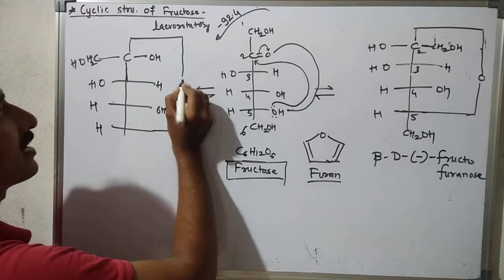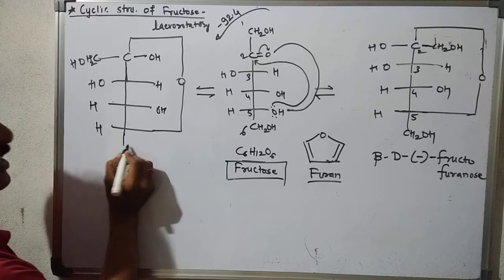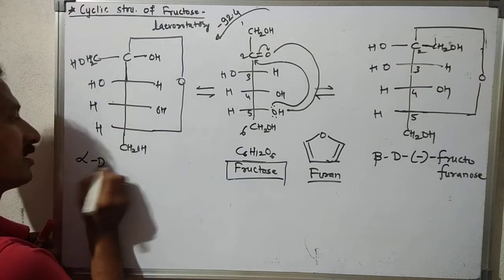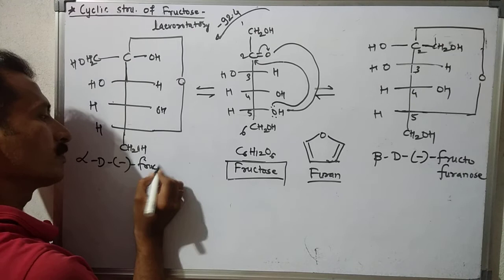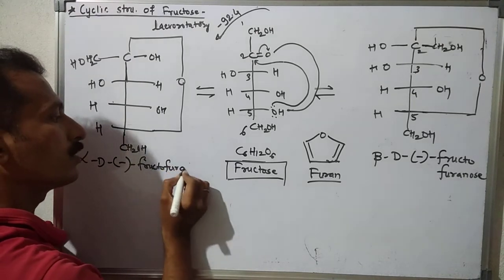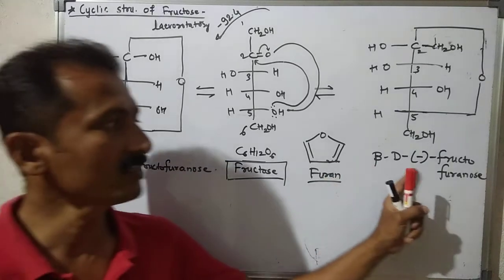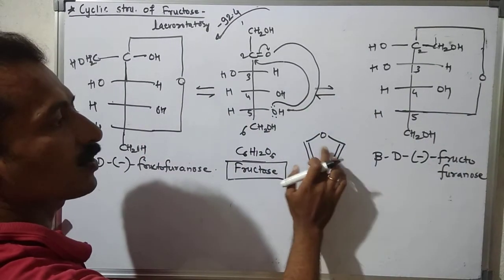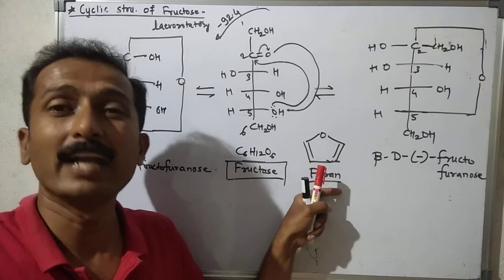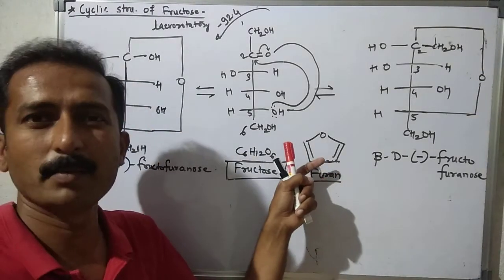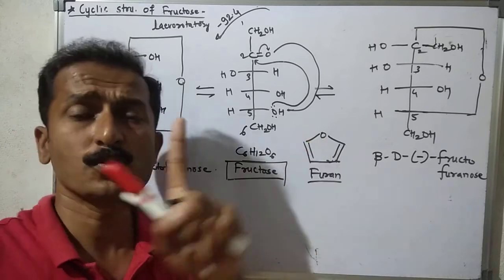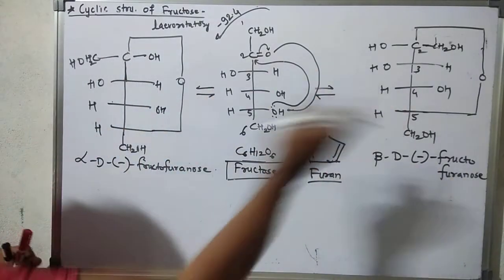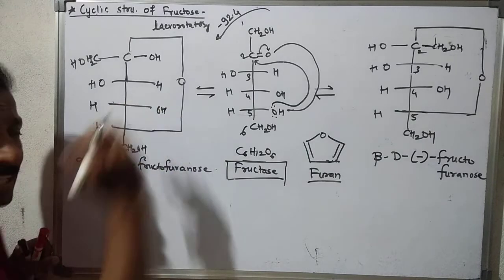There is only a minor change at the anomeric carbon (C2). CH2OH positions differ giving alpha-D-minus fructofuranose and beta-D-minus fructofuranose. These structures are analogous with the furan ring, which is a heterocyclic compound — an organic compound whose ring contains at least one heteroatom.